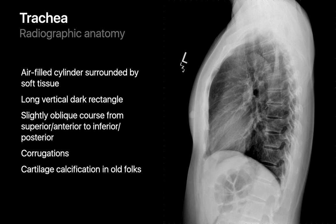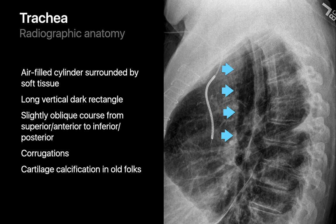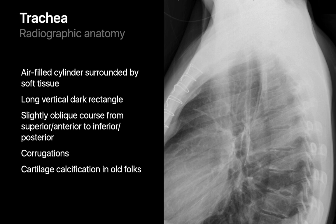The trachea is an air-filled tube surrounded by soft tissue, visible as a long vertical dark rectangle in the upper chest, oriented slightly obliquely so that its superior end is slightly more anterior and its inferior end is slightly more posterior. In some patients, the anterior margin of the tracheal air column can appear corrugated due to prominent tracheal cartilage rings, which can even appear calcified in some older patients.